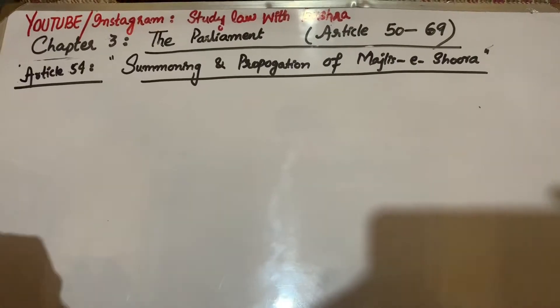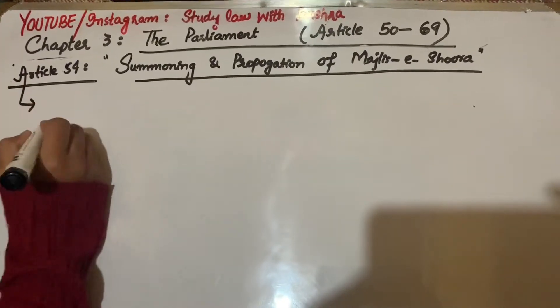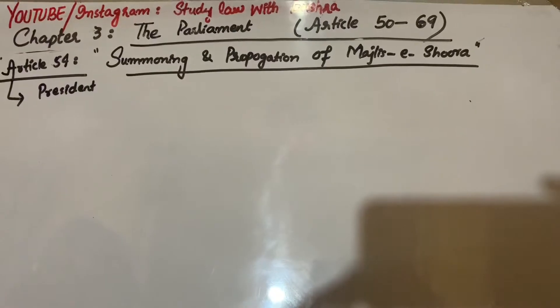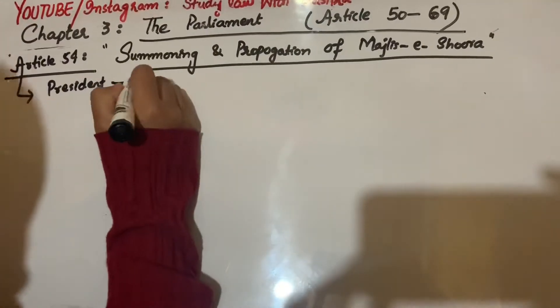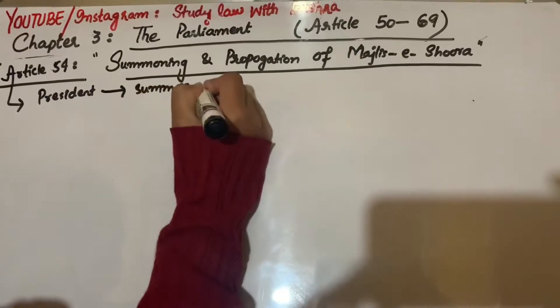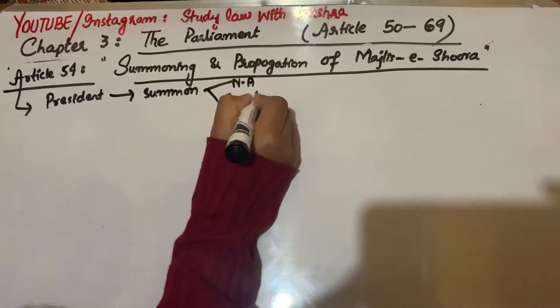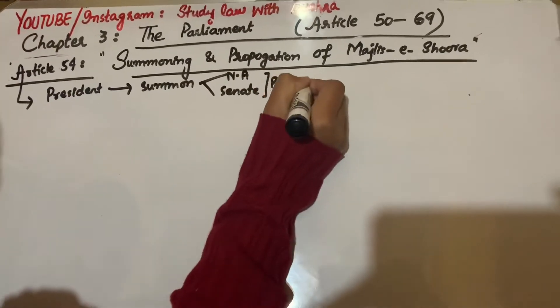Moving towards Article 54, Clause 1 says that the President may from time to time summon either house or both the houses of Majlis-e-Shura in joint sitting to meet at such time and place as he thinks fit, and may also prorogue the same.